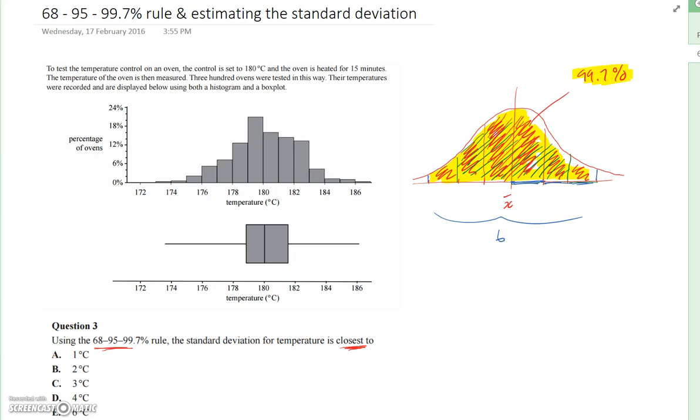If I know the range of this distribution, which I do—it's given by 187 to 173—I can read it from the histogram or box plot. Then I know my data ranges from 173 to 187, which is 14 degrees.